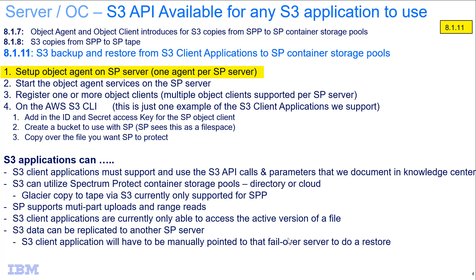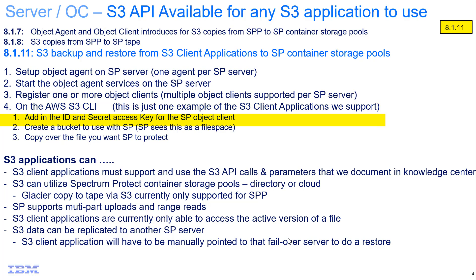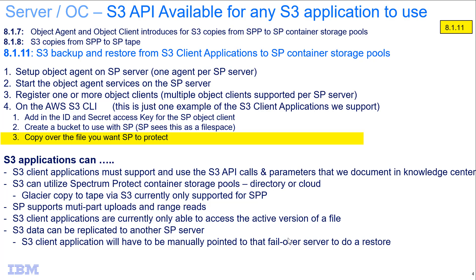In this demo, we'll go through setting up an object agent on the Spectrum Protect server and starting the services for that object agent. Then I'll register an object client — both from the Operations Center and from the command line. And then from the S3 client application, we'll register the Spectrum Protect ID and secret access key, create a bucket, and copy files over from AWS to Spectrum Protect using S3.